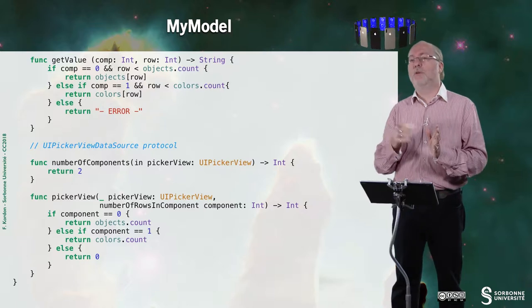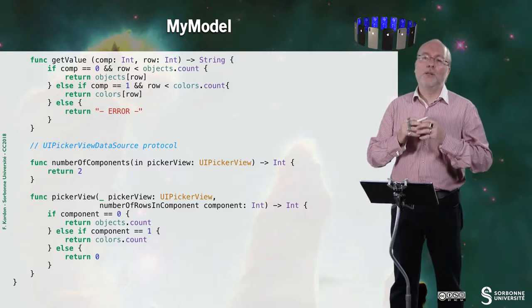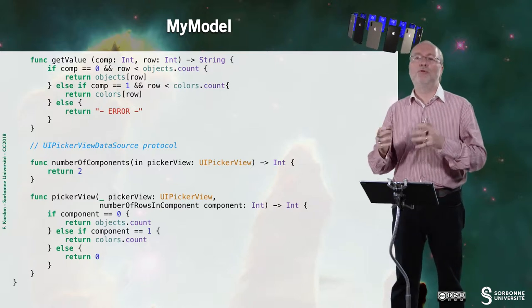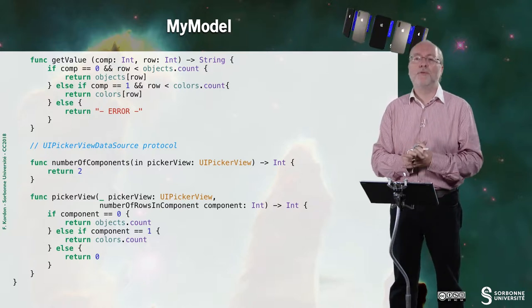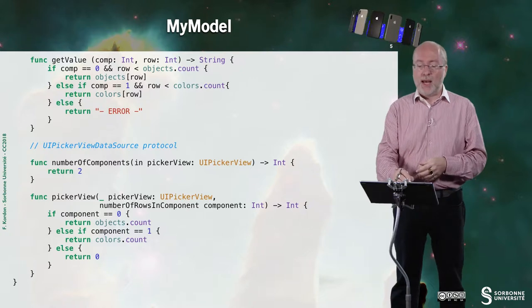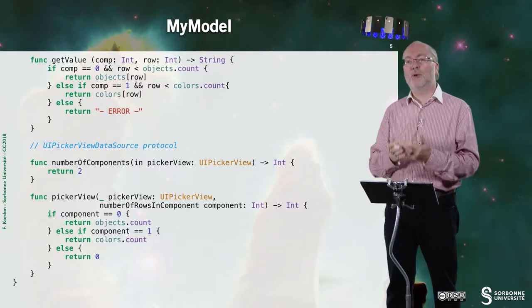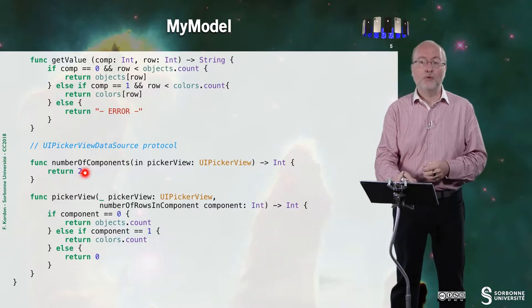And then this is just the error case that should never happen. But it's just to avoid warnings because you should be in a situation where you have no return reached. And I implement here the UIPickerViewDataSource protocol. So I have two components.